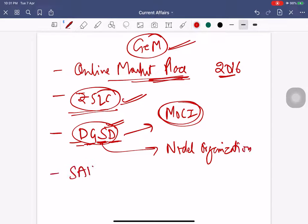The related current affair is that Steel Authority of India Limited, SAIL, has become the first central public sector enterprise to enter into an MOU with the GeM portal.